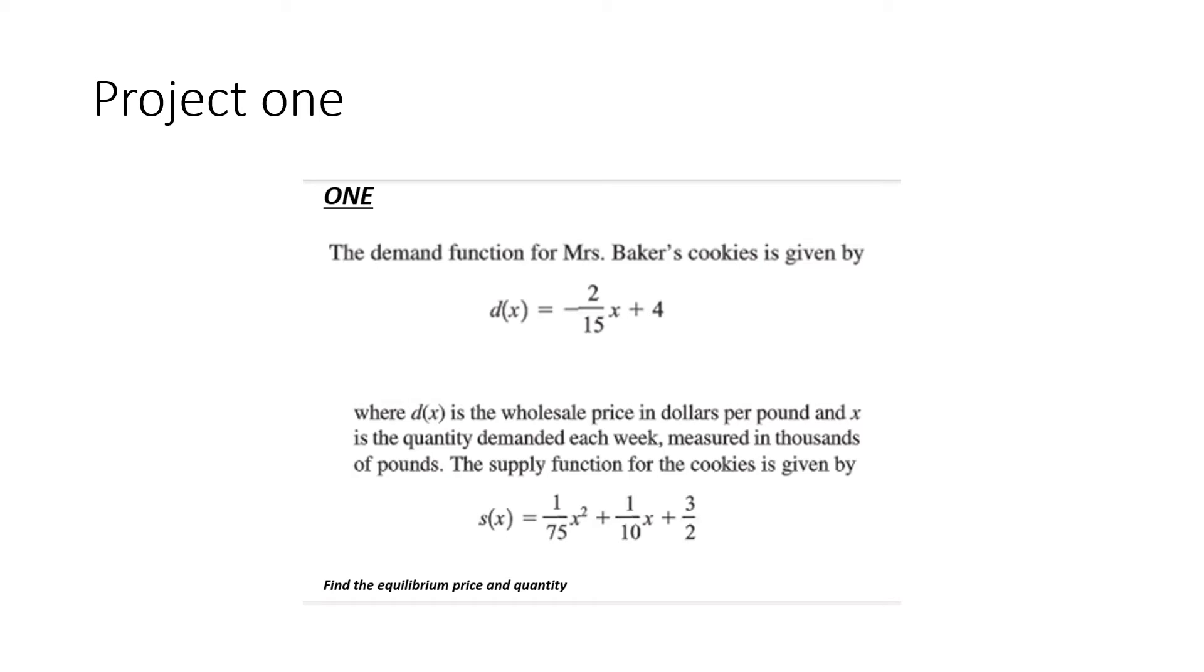The supply function for the cookies is given by s of x equals 1 over 75 x squared plus 1 over 10 x plus 3 over 2. You are to find the equilibrium price and quantity. And Zach, I am expecting exact answers for these.